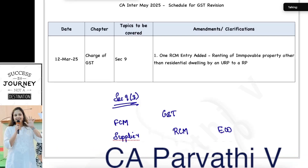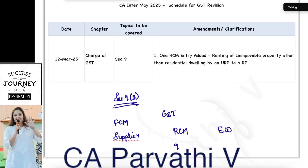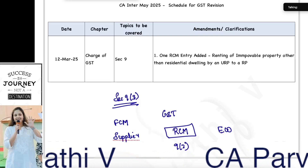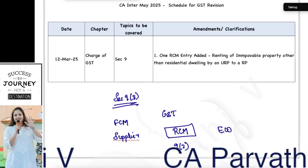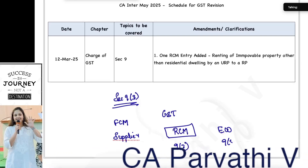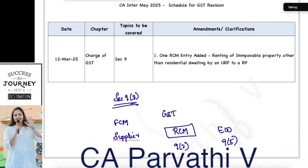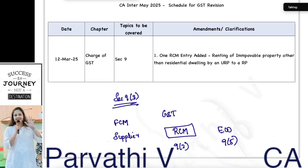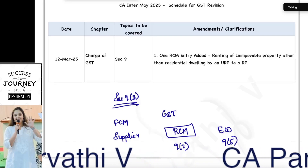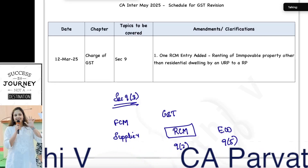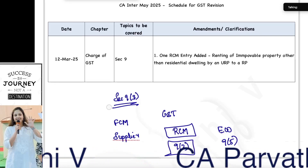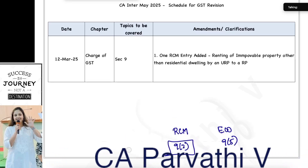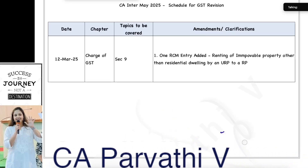In certain cases, stored in section 9.3, it will be the recipient who is liable to pay GST to the government. And in certain other cases, stored in section 9.5, it will be the e-commerce operator who is liable to pay GST to the government. So what new RCM entry has been added in section 9.3?